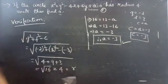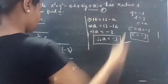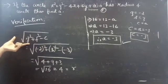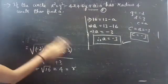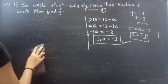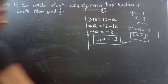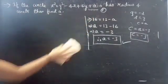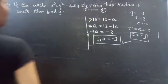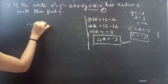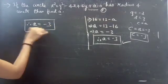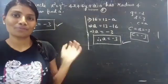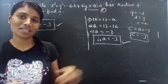Therefore, a = -3 is the correct answer. We have seen a problem from circle in this video. Hope you understood. We will see you in the next video. Bye-bye.